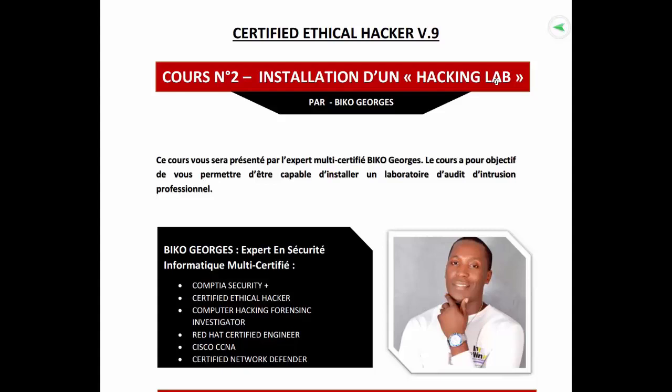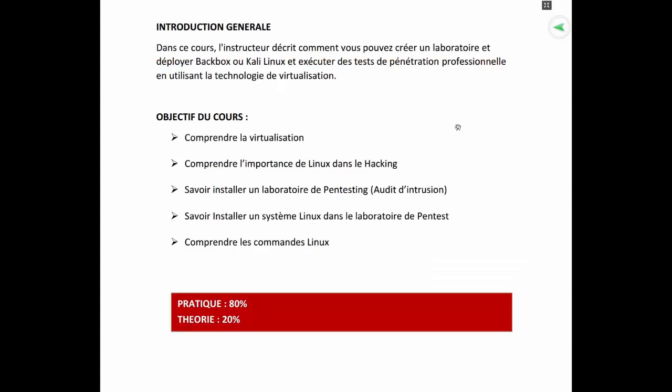Voyons les objectifs que nous devons atteindre à la fin de ce deuxième cours. Voici les objectifs du cours numéro 2, c'est-à-dire l'installation d'un hacking lab. Hacking lab veut dire en français laboratoire de hacking. De manière plus technique, hacking lab veut dire laboratoire d'audit d'intrusion, ou en anglais laboratoire de pen testing ou de penetration testing. C'est dans ce laboratoire que vous allez développer votre potentiel de hacker, appliquer vos techniques et effectuer vos découvertes.